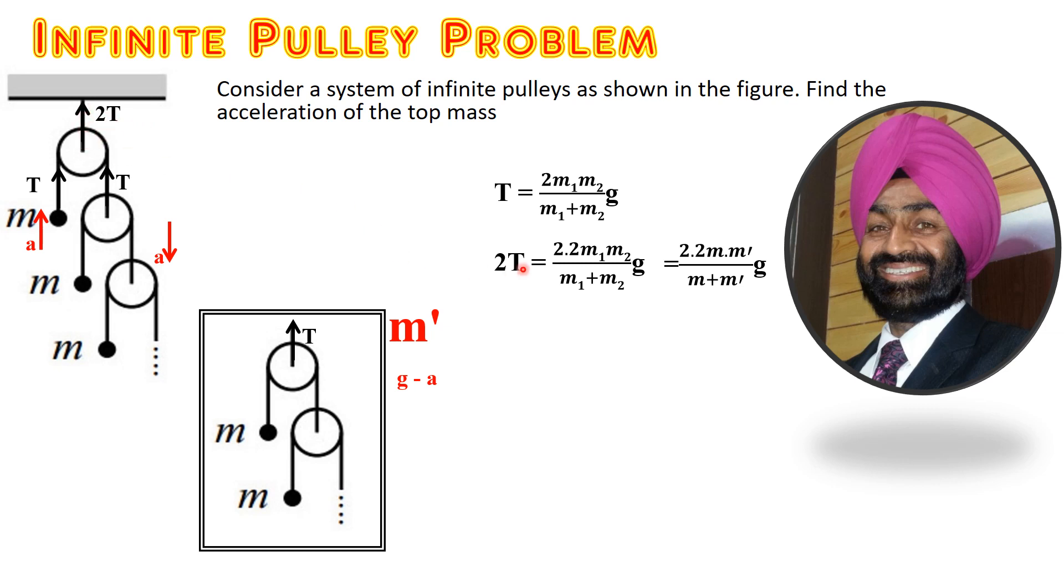This system is not going to experience acceleration g due to gravity but acceleration experienced is g minus a. The way we have written tension here as 2T, same way we are going to write this tension. This tension T would be equal to the same expression only change is g is not equal to g, it is g minus a. Same way tension here is T, so we can write T here equals twice the product of masses divided by sum of masses but instead of g you would write g minus a.